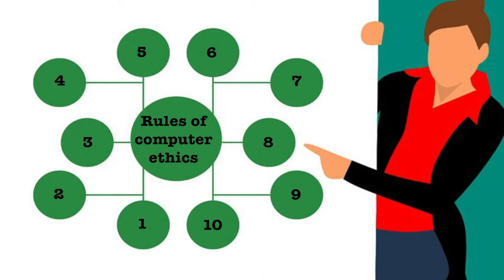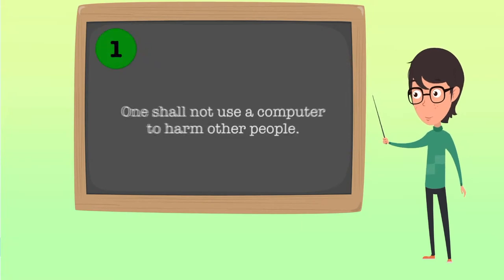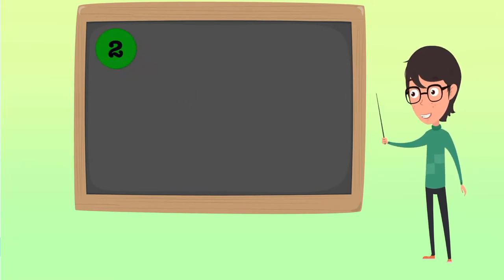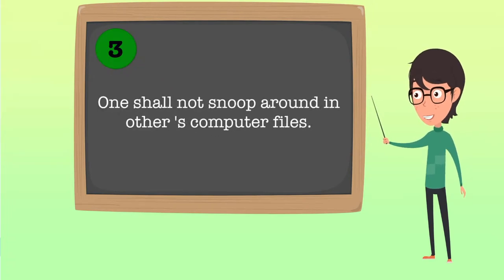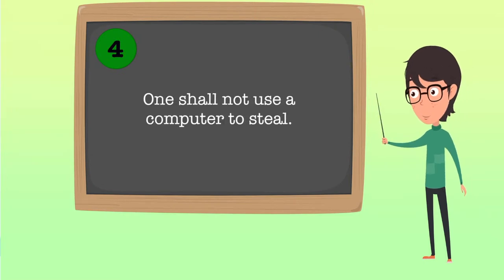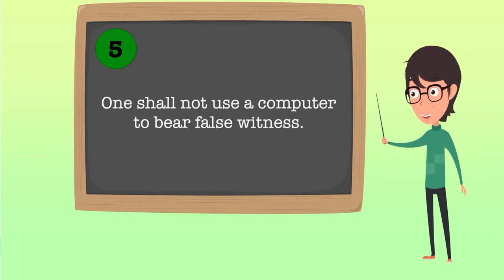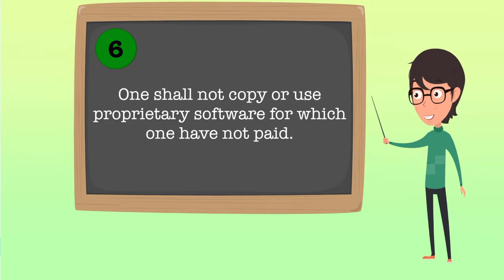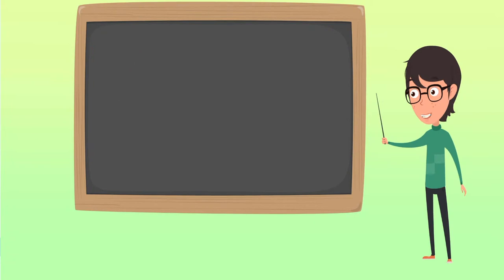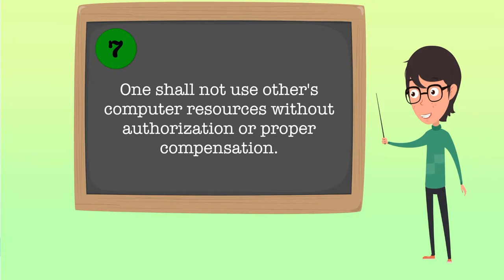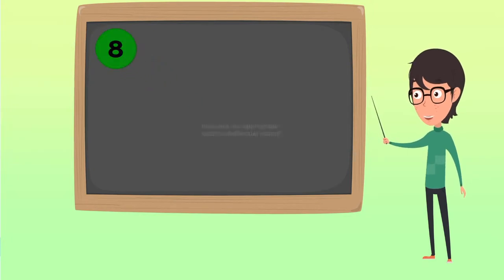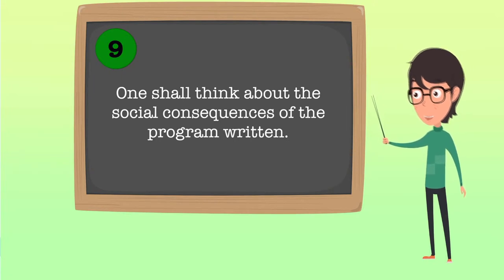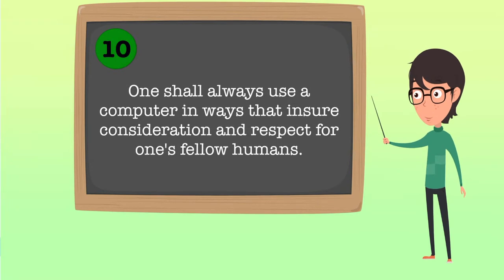One should always remember the ten rules of computer ethics. Number one: one should not use a computer to harm other people. Two: one should not interfere with others' computer work. Three: one should not snoop around in others' computer files. Four: one should not use a computer to steal. Five: one should not use a computer to bear false witness. Six: one should not copy or use proprietary software for which one has not paid. Seven: one should not use others' computer resources without authorization or proper compensation. Eight: one should not appropriate others' intellectual output. Nine: one should think about the social consequences of the programs one writes. Ten: one should always use a computer in ways that ensure consideration and respect for one's fellow humans.